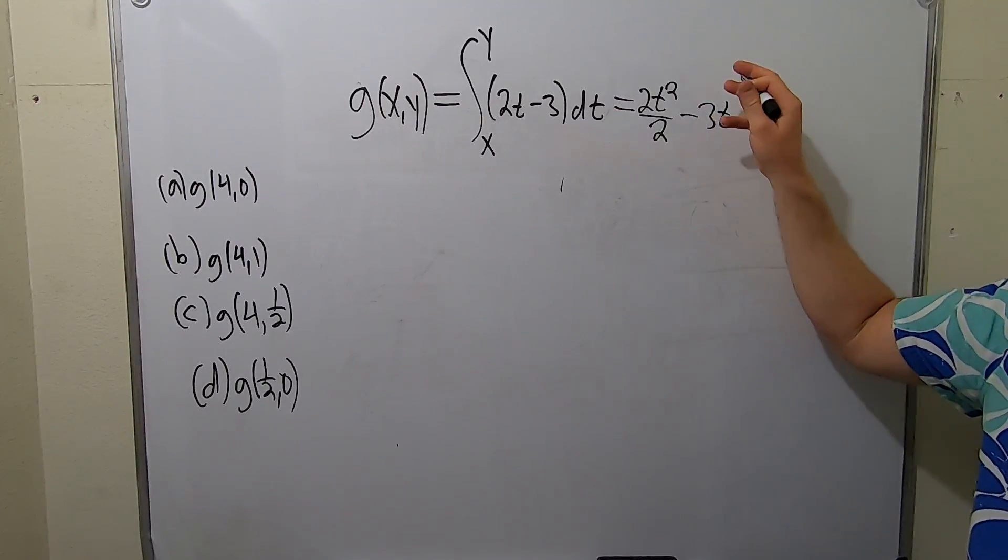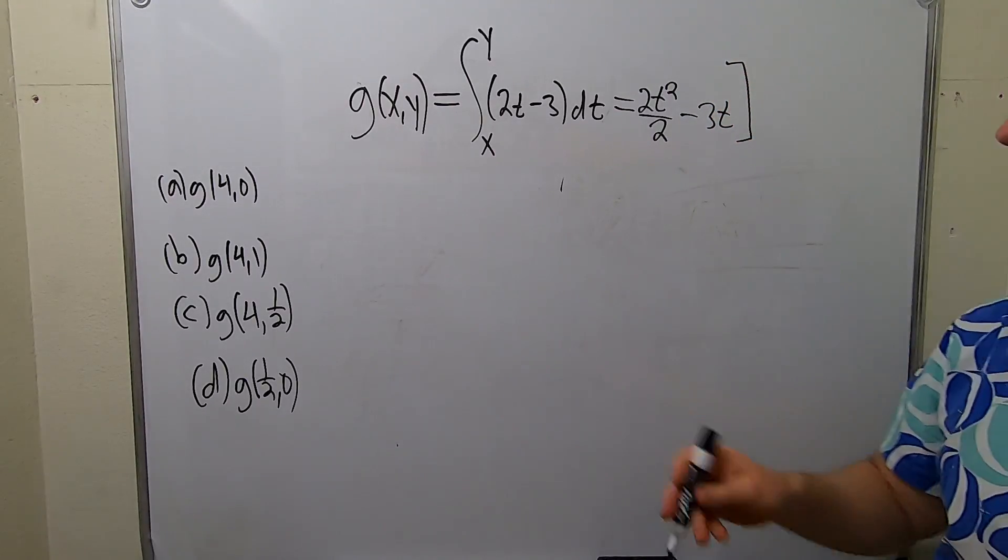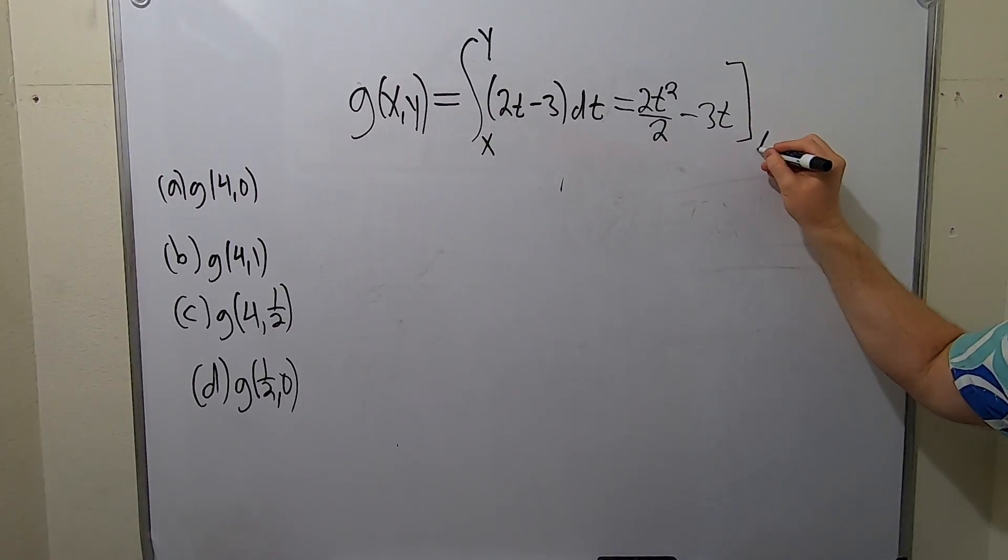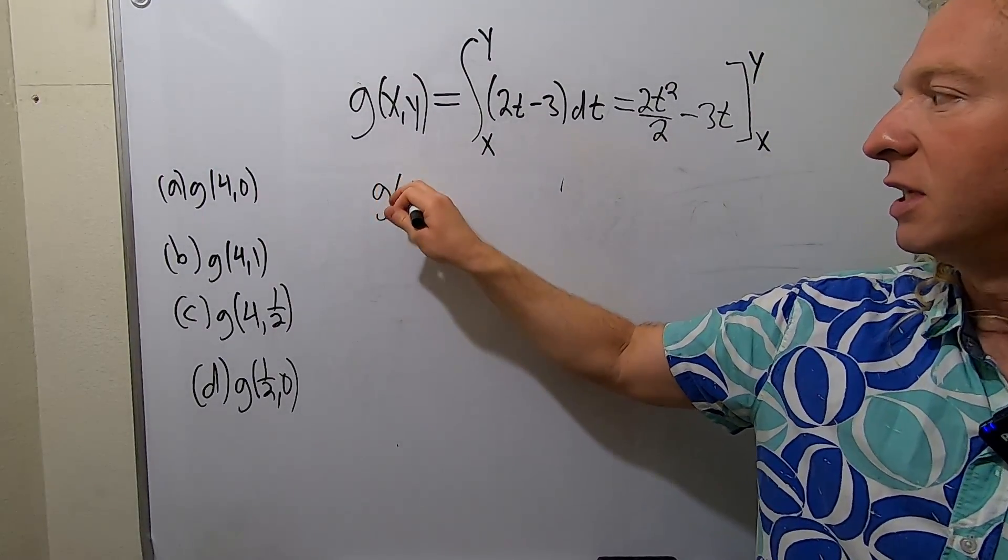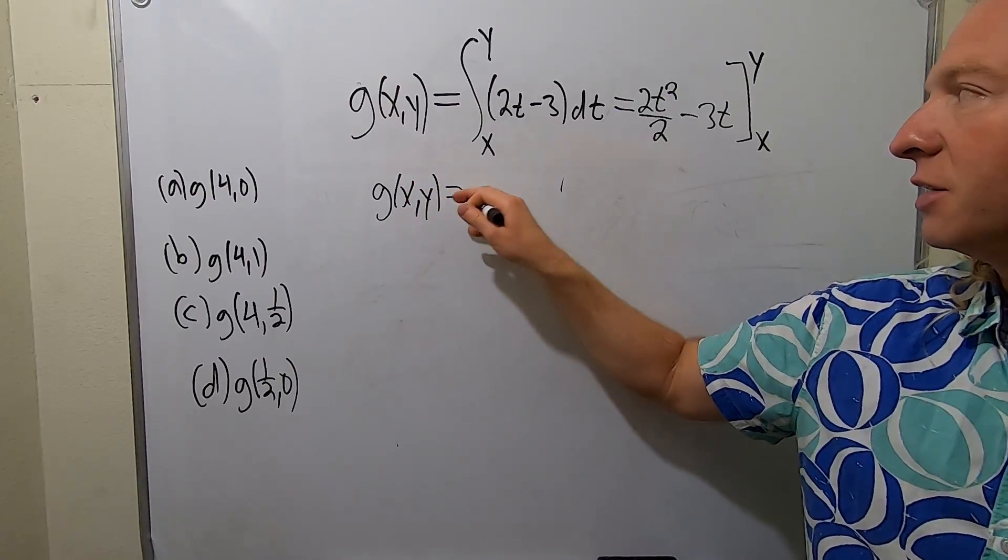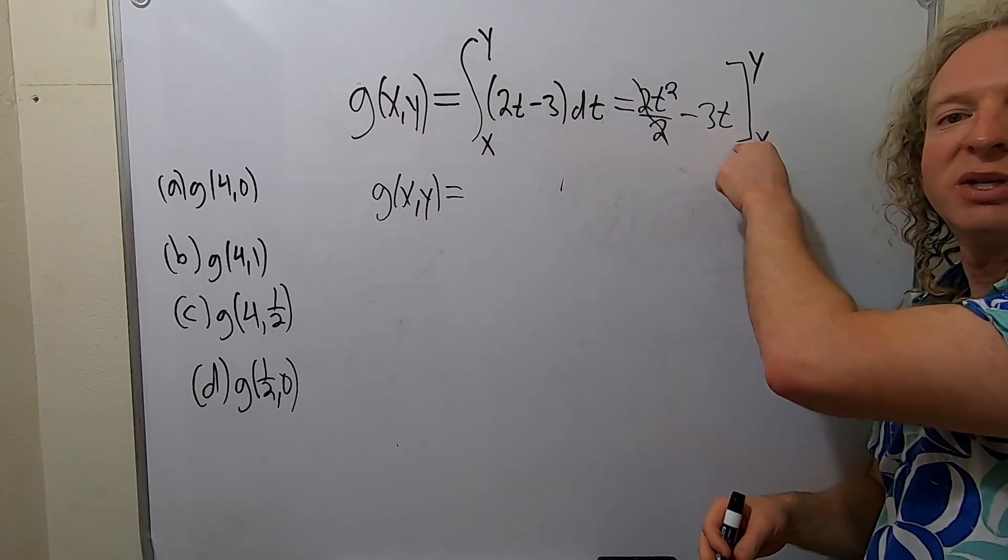That wasn't so bad. Then you put your bracket here and you're going from x to y. So g of xy, let's keep going. These cancel, so we just get t squared minus 3t.